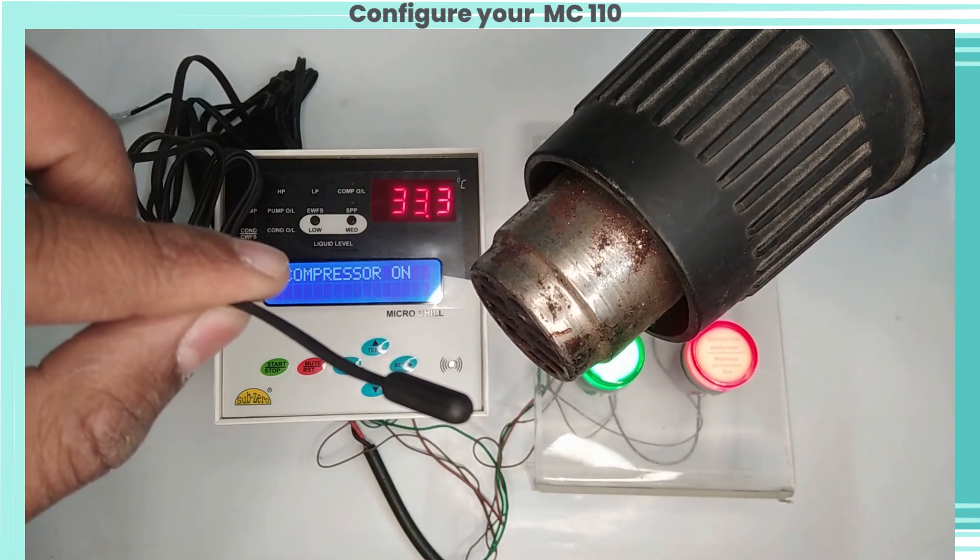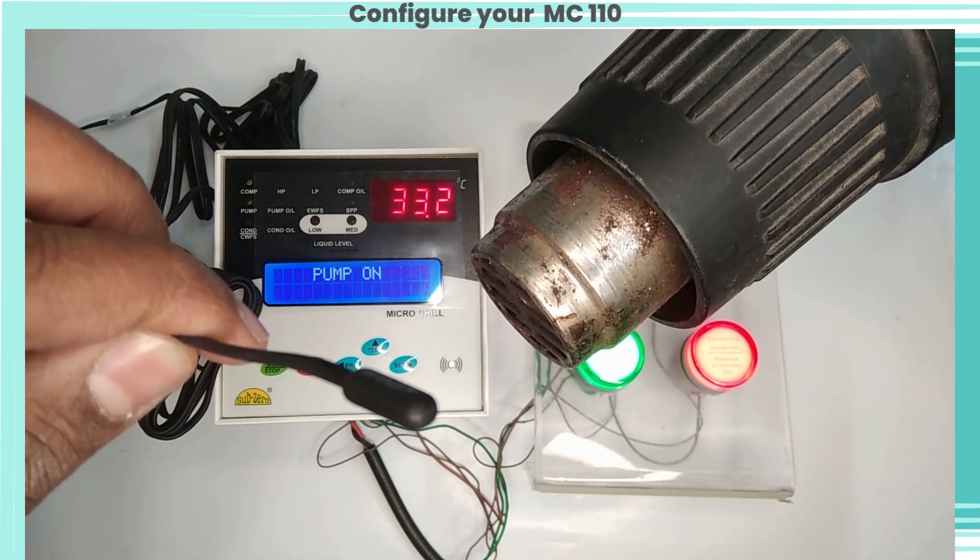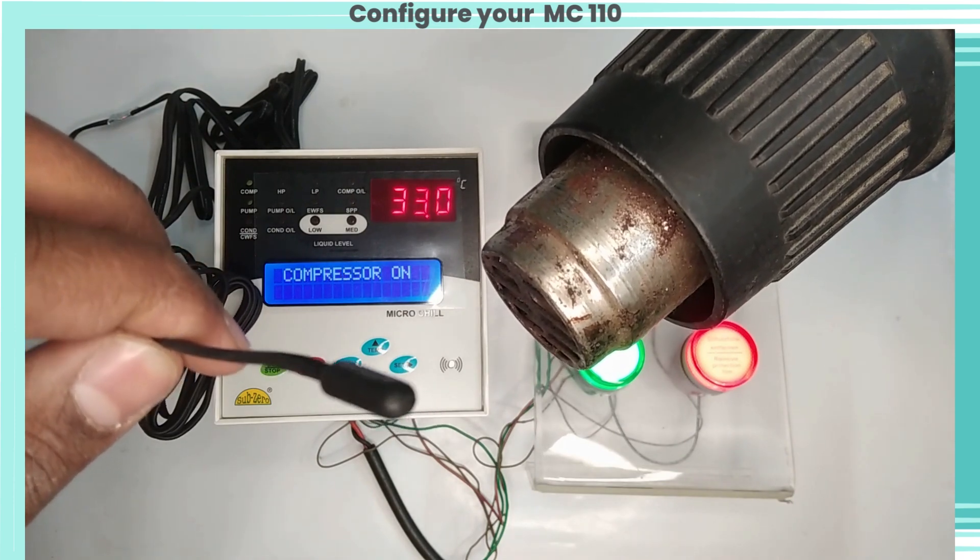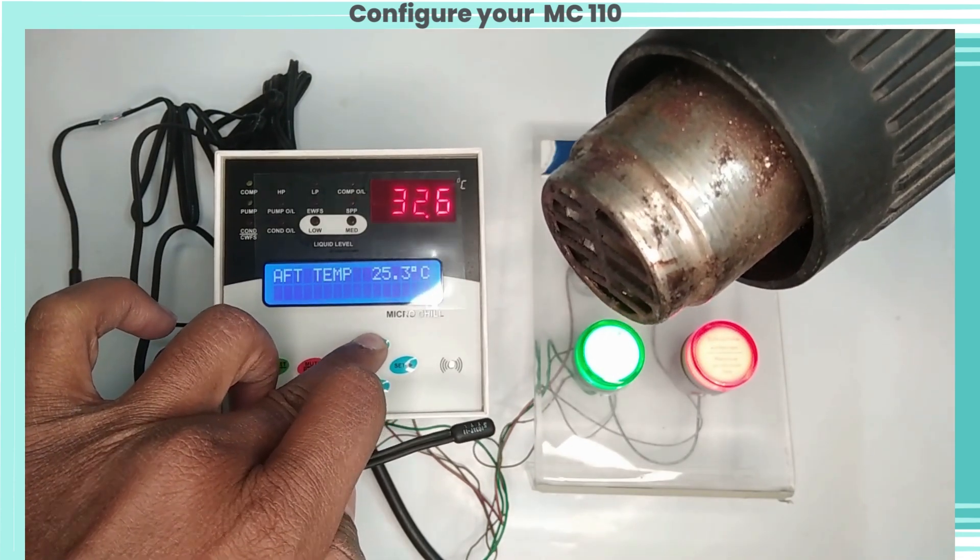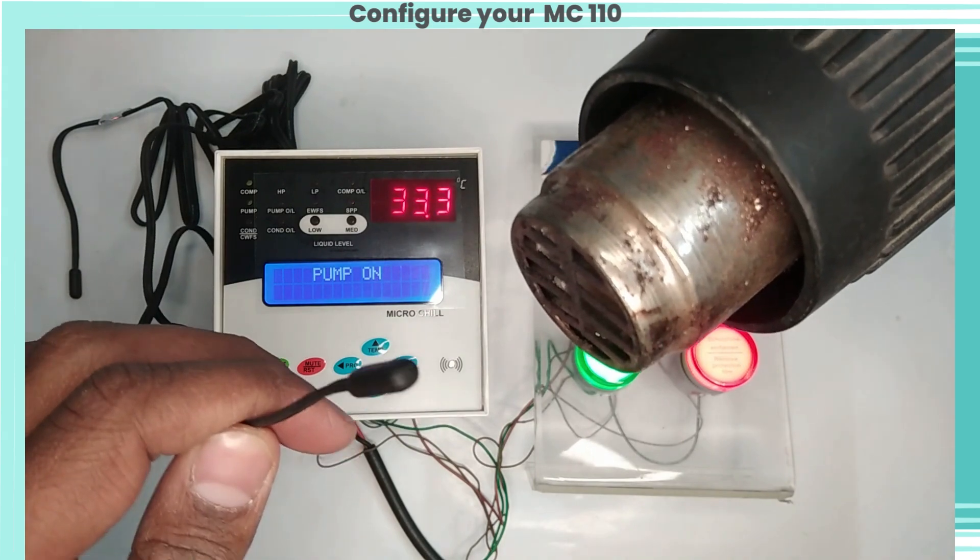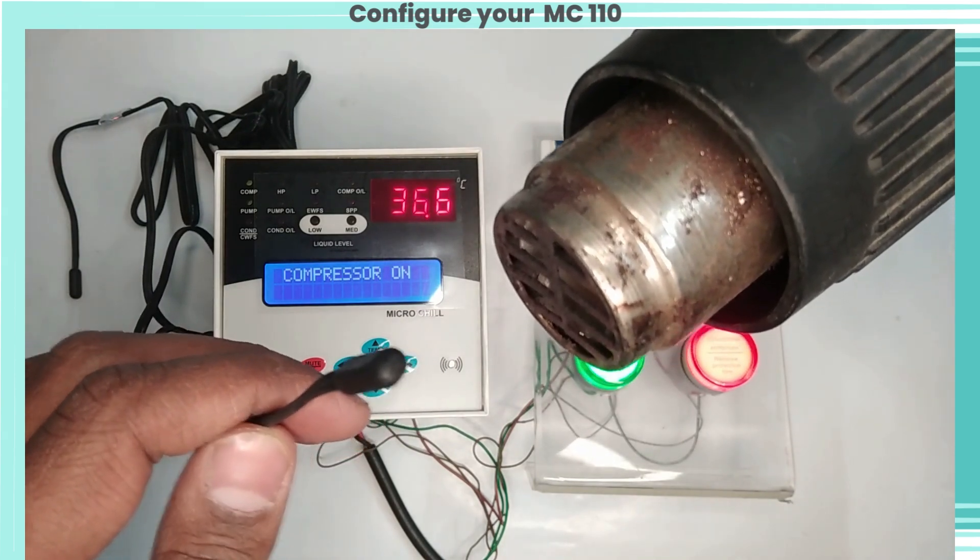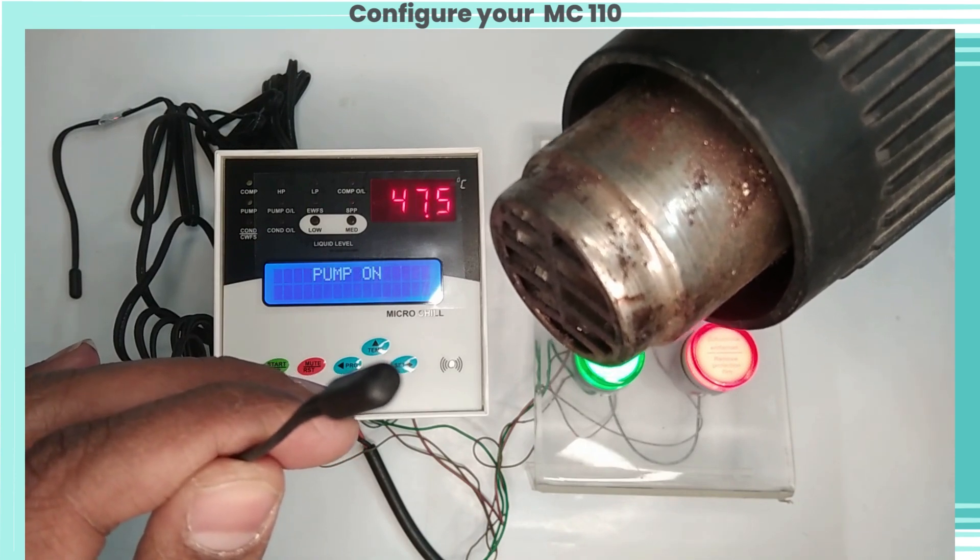We have set high temperature alarm at 50 degrees Celsius. So let's give hot air to the temperature sensor. We can see the temperature is increasing. Here we can see when temperature goes above 50, high temperature alarm is playing and alarm relay is on. By pressing mute button, we can mute the alarm.